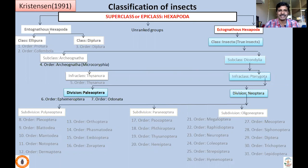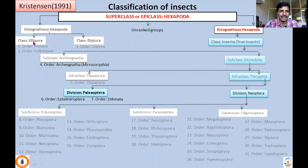In the previous systematic classes I was telling that I keep on putting this slide till the end of this systematic lecture series, with the sole intention that this classification will be clearly understood. Superclass Hexapoda is divided into two unranked groups: Entognatha Hexapoda and Ectognatha Hexapoda. Entognatha consists of class Ellipura with orders Protura and Collembola, class Diplura, and class Insecta which is the Ectognatha Hexapoda. Class Insecta is divided into subclass Archaeognatha and subclass Dicondylia, which consists of infraclass Thysanura and infraclass Pterygota.